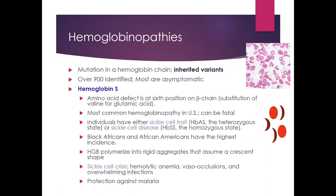Individuals can have sickle cell trait (heterozygous: one normal hemoglobin A gene, one sickle hemoglobin S gene) or sickle cell disease (homozygous: both beta chain genes are the mutated sickle genes). Black Africans and African Americans have the highest incidence. The hemoglobin polymerizes into rigid aggregates, causing the red cell to assume a crescent shape, which is visible on the blood smear.